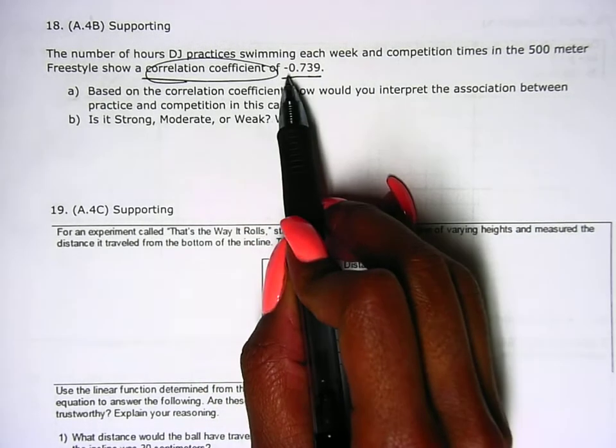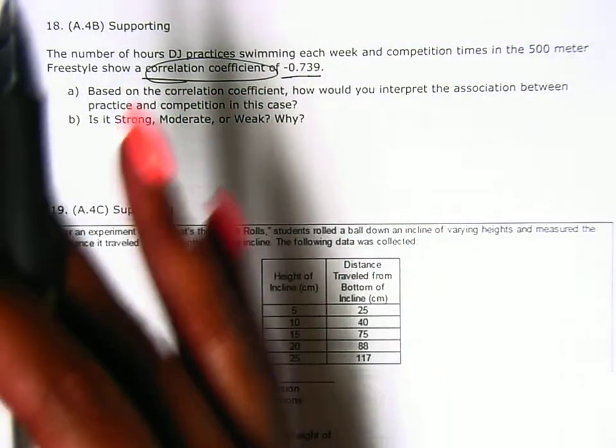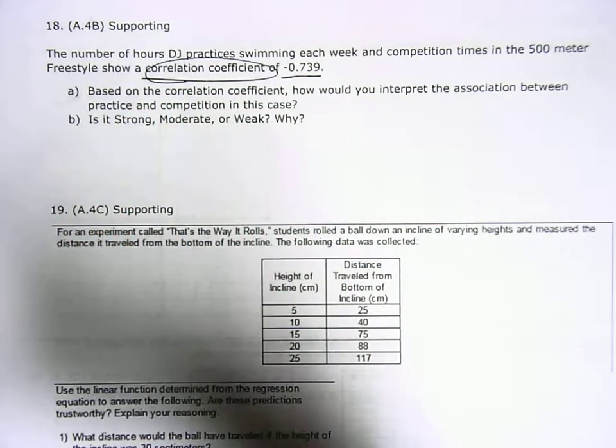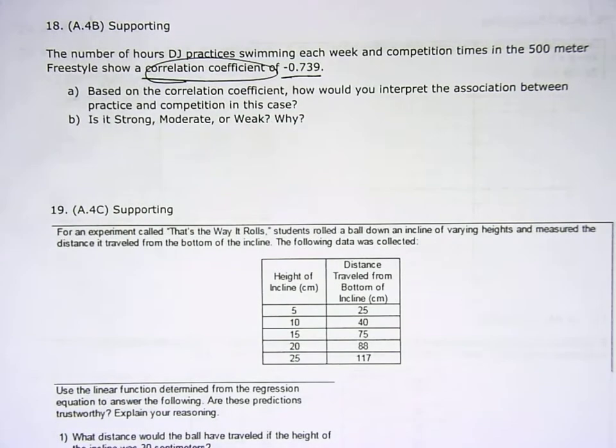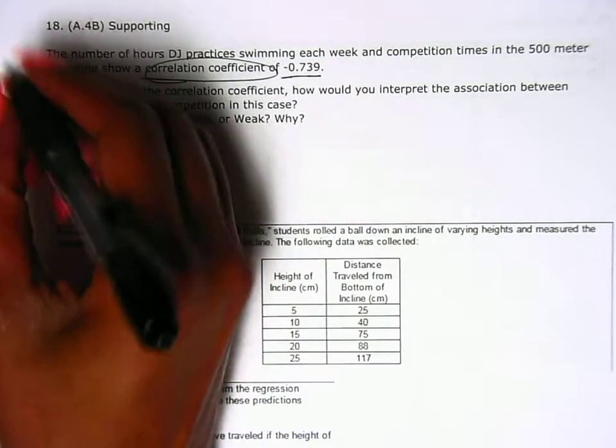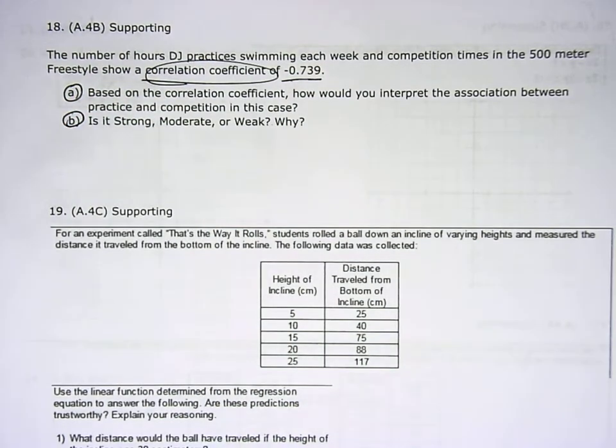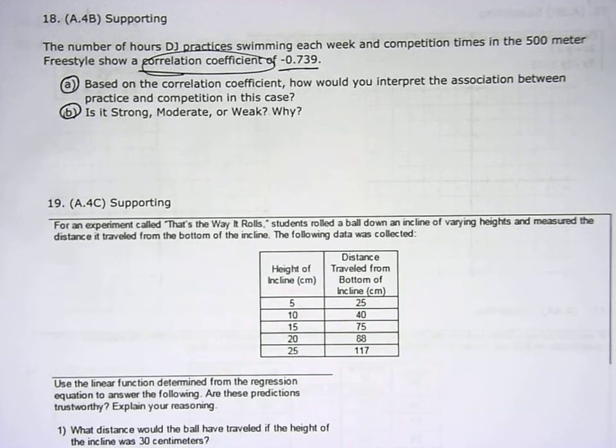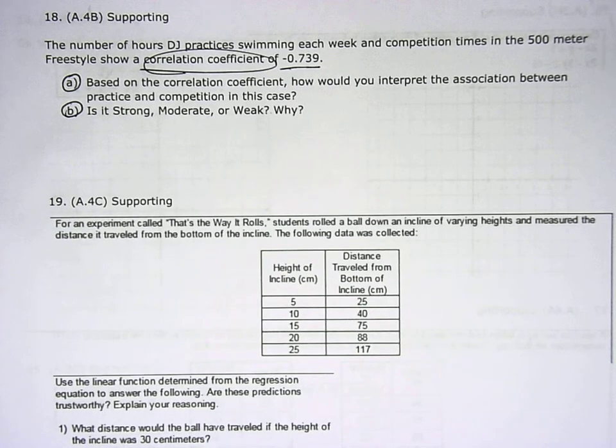Now in our case it's negative, that means our correlation is actually going down. So if we graphed it, those dots would be going down. What I want you to do is do some research and go ahead and answer A and B to the best of your abilities. Like I said, it's pretty simple - the closer that number is to negative one or one, the stronger your correlation.